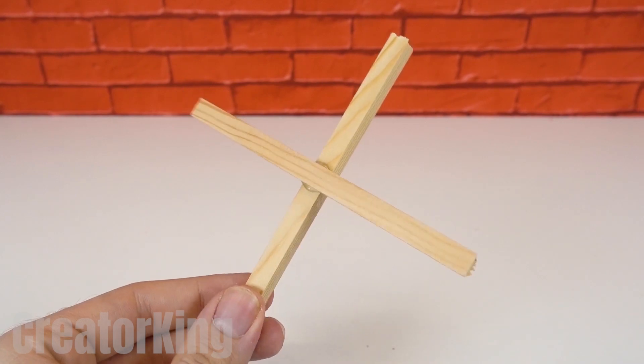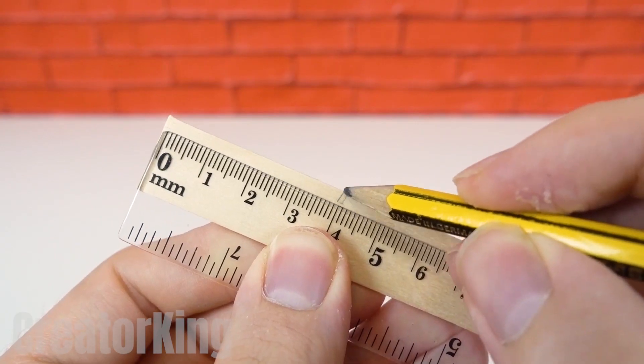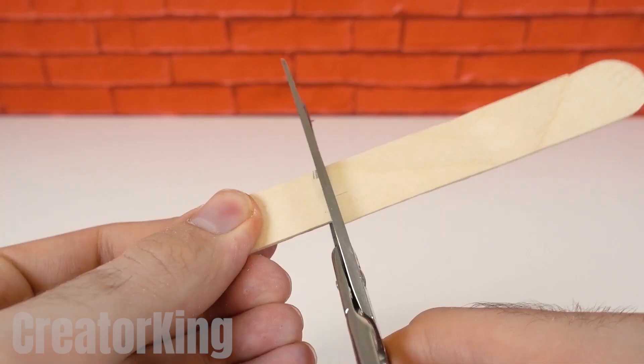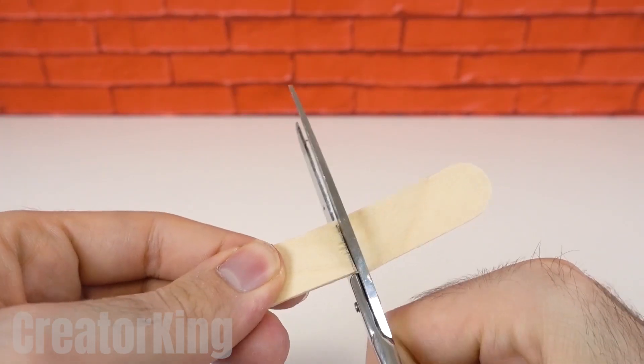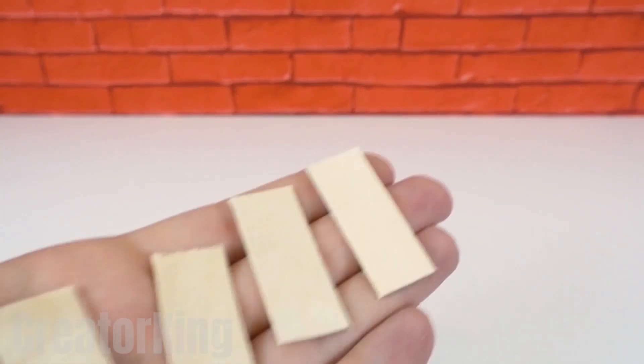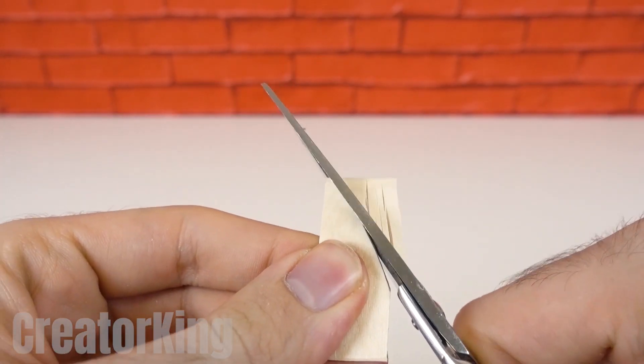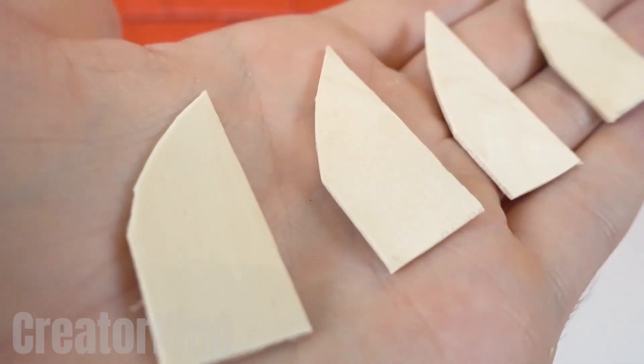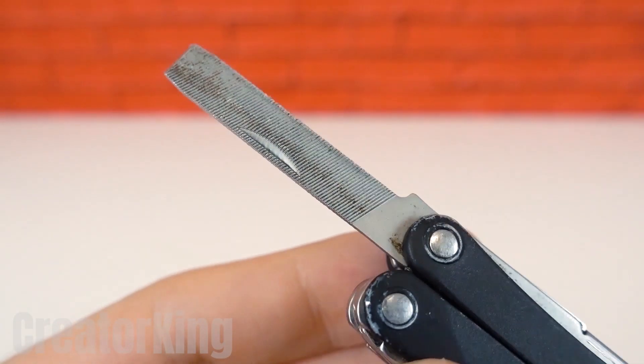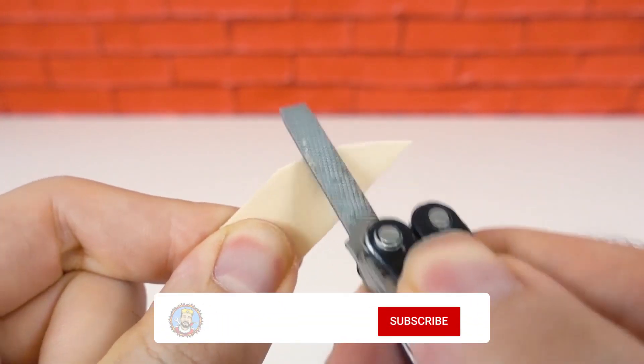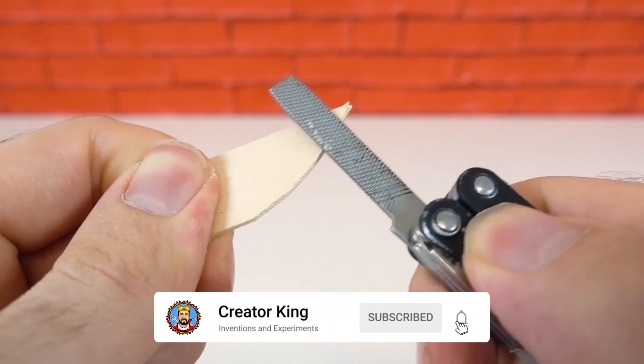Cut the ends off of another popsicle stick and measure four centimeters. All this measuring is making me dizzy. Use this piece to replicate it four times. These will be the executioners of our ratatouille trap. Make a rounded cut on each piece so that the ends are pointed. Using sandpaper, sharpen each one for easy slicing and attach them to each end of the cross.